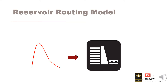A reservoir routing model is used to determine pool stages and discharges by routing a flood hydrograph through the reservoir pool and outlets. The reservoir routing model includes characteristics of the reservoir, such as the stage storage relationship and information about physical structures like spillways and other outlets. RMC-RFA is based on the level pool routing method and continuity equation. The reservoir model is used to calculate the peak stages for the stage frequency curve.